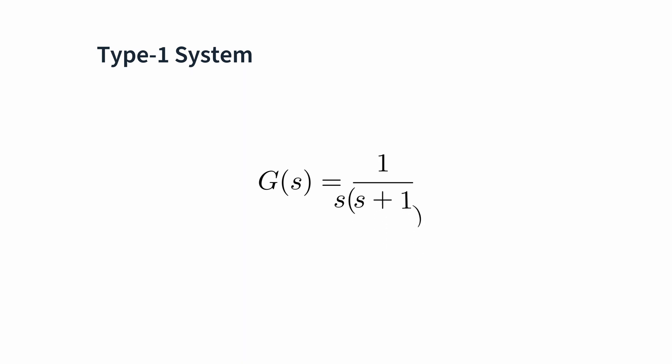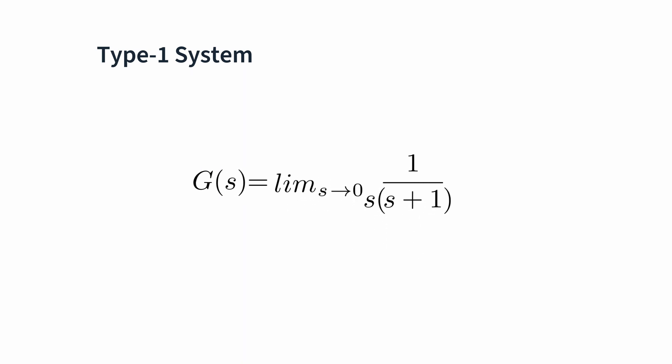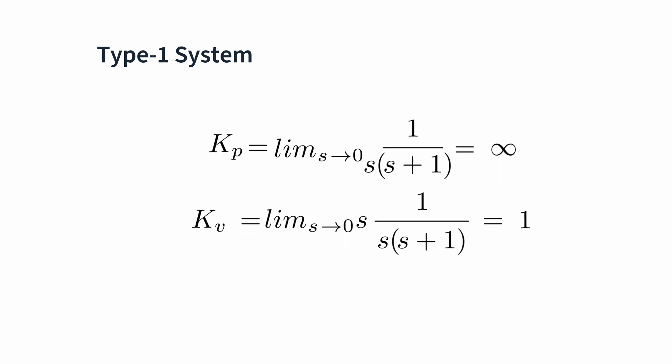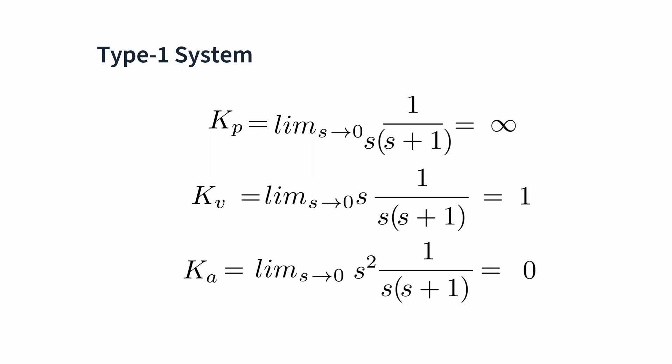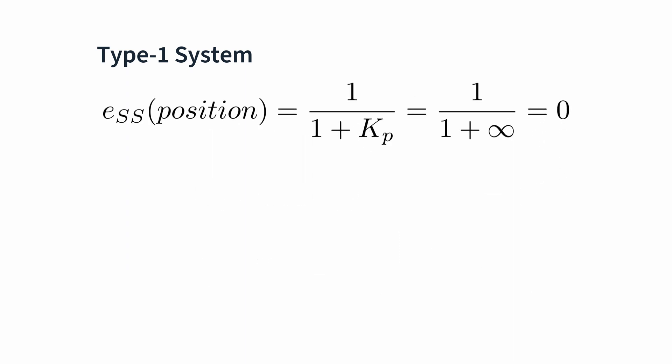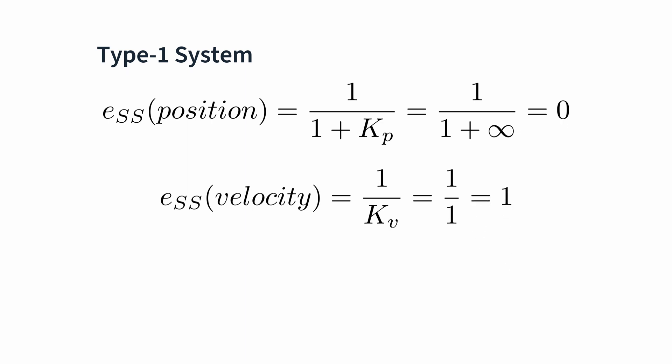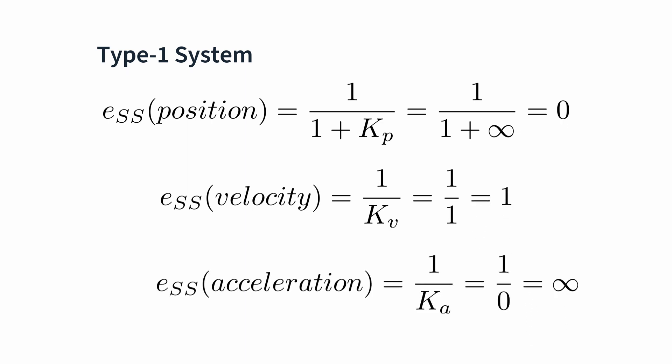Let's look at an example type one system now. For a type one system, let's use 1 over s(s + 1) as an example. Doing the same thing as we did with the type zero system, we end up with Kp as infinity, Kv as 1, and Ka as 0. Now our position error is 0, our velocity error is 1, and our acceleration error is infinity. So for a type one system, position error is 0, while velocity is constant, and acceleration error is infinite at steady state.